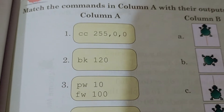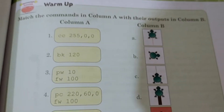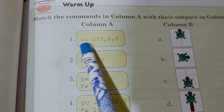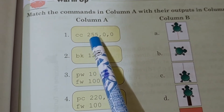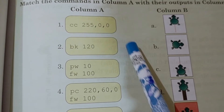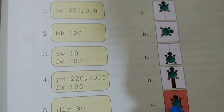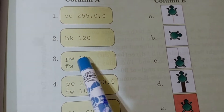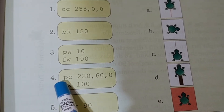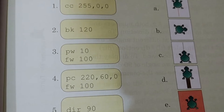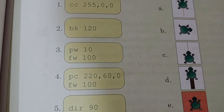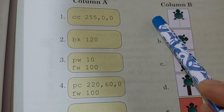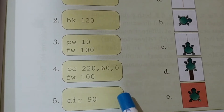CC means canvas color. CC 255, 0, 0 means the background color changes to red — this is answer E. Then backward 120, which is 120 steps backward — this is answer C. Then PW 10 and forward 100, meaning pen width 10 and forward 100 — this is answer D. Then PC pen color 220, 60, and 0, meaning orange color and forward 100 — this is answer A. Then DIR 90, which changes its direction.